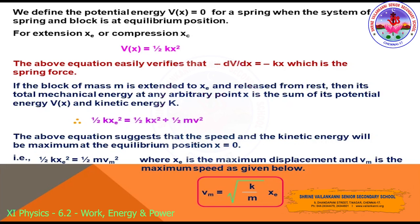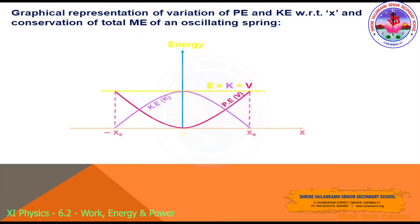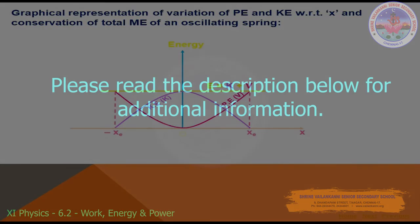The maximum speed is v_m = √(k/m) · x_m. Looking at the graphical representation of kinetic energy, potential energy, and total energy versus displacement x: since both kinetic energy and potential energy depend on x², their graphs are parabolic. The total mechanical energy E = K + U remains constant, so its graph is a straight line parallel to the displacement axis. This concludes the conservation of energy in an elastic spring.